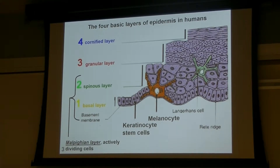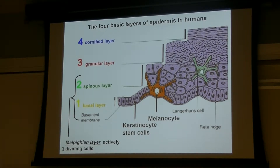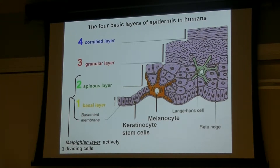Up there on the fourth layer — the cornified layer — these cells are flattened and basically full of keratin. This gives these cells a particular property of being really strong and protective for the organism, so they form a shield on the outside of the body.